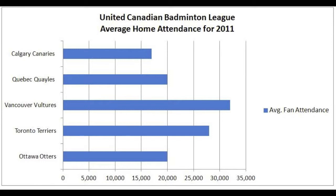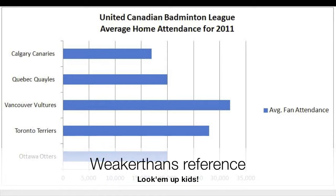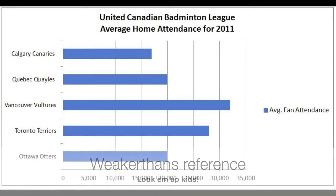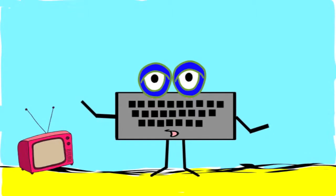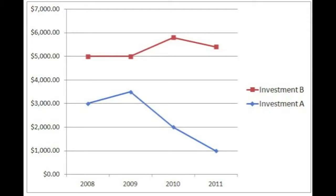Perhaps it's time to move the Canaries to Winnipeg. Line graphs show changes over time. This line graph shows the value of two different investments over a four-year time period. We can see that investment A gained money from 2008 to 2009, but then lost money from 2009 to 2010, and from 2010 to 2011.